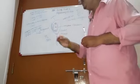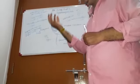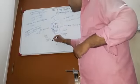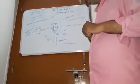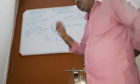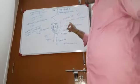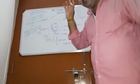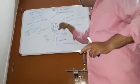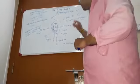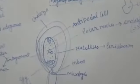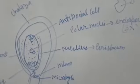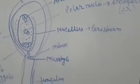The micropyle is a small opening through which the pollen tube enters inside the embryo sac. The nucellus is a nutritive tissue that nourishes and develops the embryo sac. In some plants the nucellus is unused and will gradually degenerate.